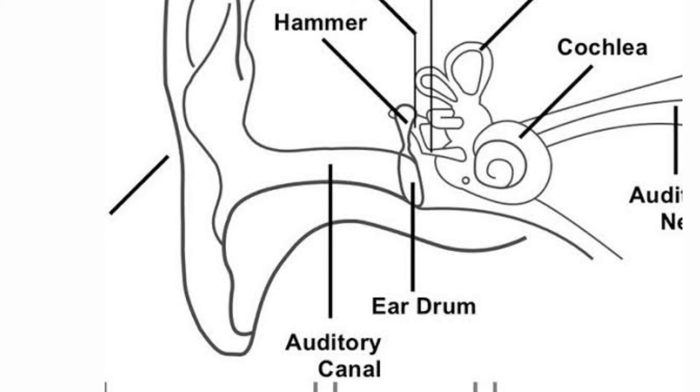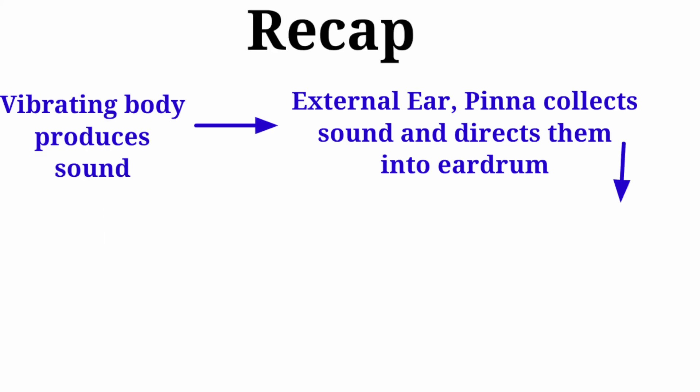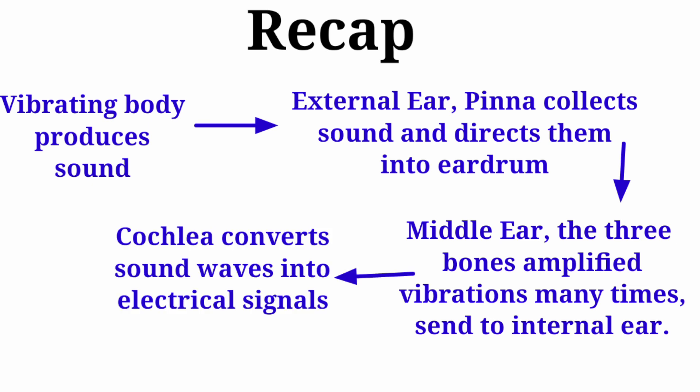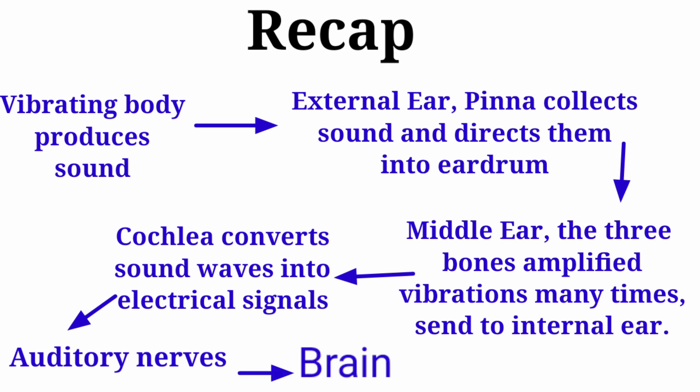Recap: A vibrating body produces sound. The external ear's pinna collects sound waves and directs them to the eardrum. The eardrum vibrates and passes vibrations to the middle ear, where the three ossicles amplify the vibrations and pass them to the inner ear. In the inner ear, the cochlea converts sound waves into nerve impulses or electrical signals, which are carried by the auditory nerves to the brain. The brain then decodes those nerve impulses into a specific sound.